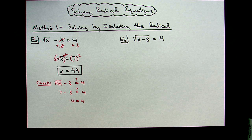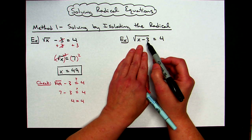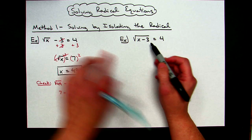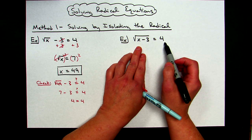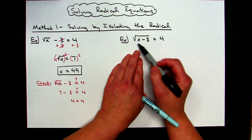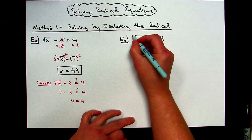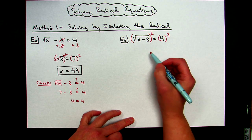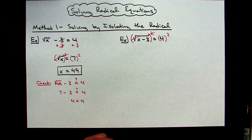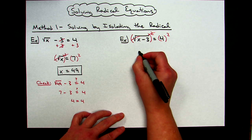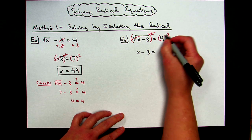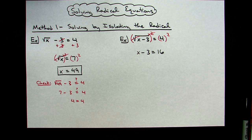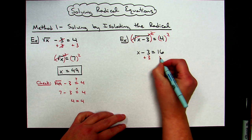For this second example, the square root is already isolated, so I don't have to do anything first. I can immediately go to squaring both sides because that square root is already isolated. When I do that, the square root and the square go away because they're inverse operations, leaving me with x minus three on the left, and four squared — four times four — is sixteen on the right. Now that's just a standard one-step equation; add three to both sides.